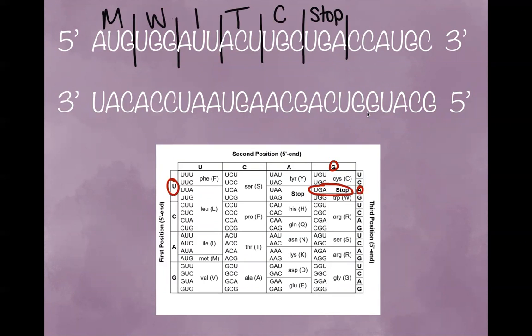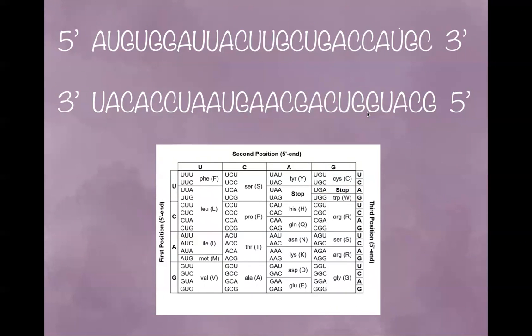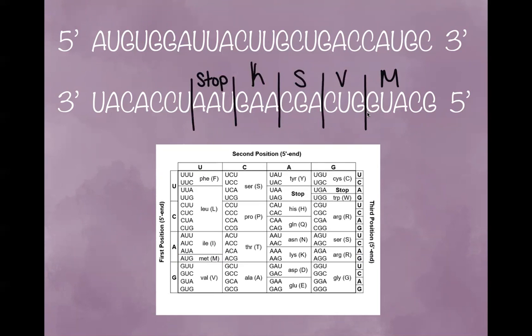This amino acid sequence is five acids long and we are looking for a four acid sequence, so let's keep looking. Now let's read the top strand from right to left. Pause the video and search for the start codon AUG. There is no AUG sequence, so let's go to the bottom strand and read it from right to left. Here is our start codon. Pause the video and find the rest of the codons. Hopefully you got the same codon sequence.